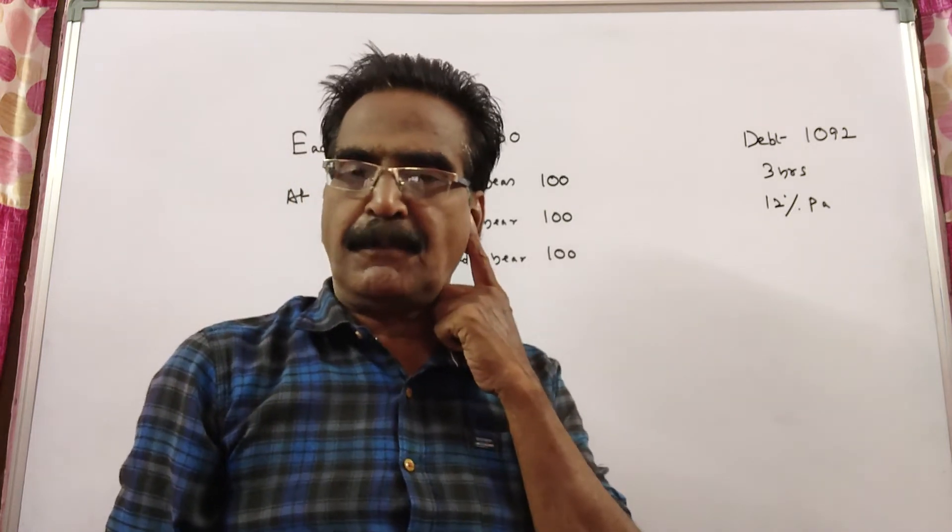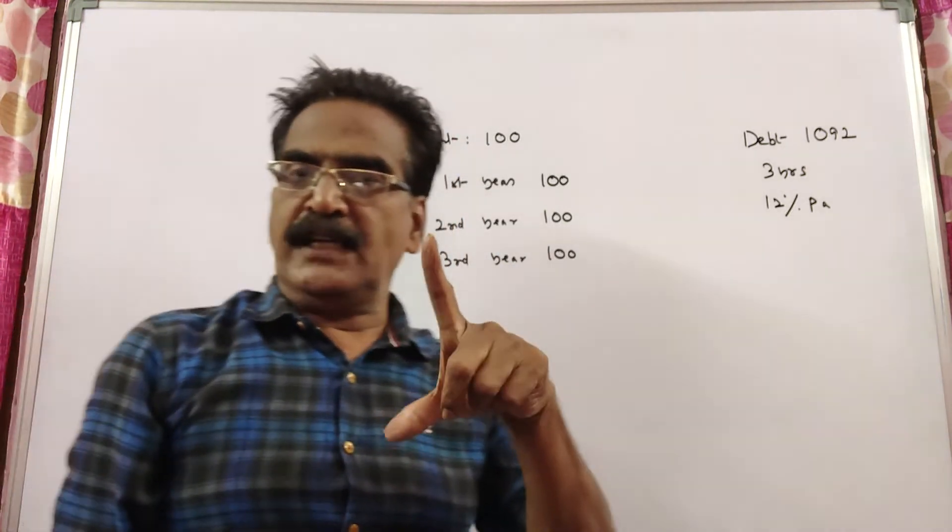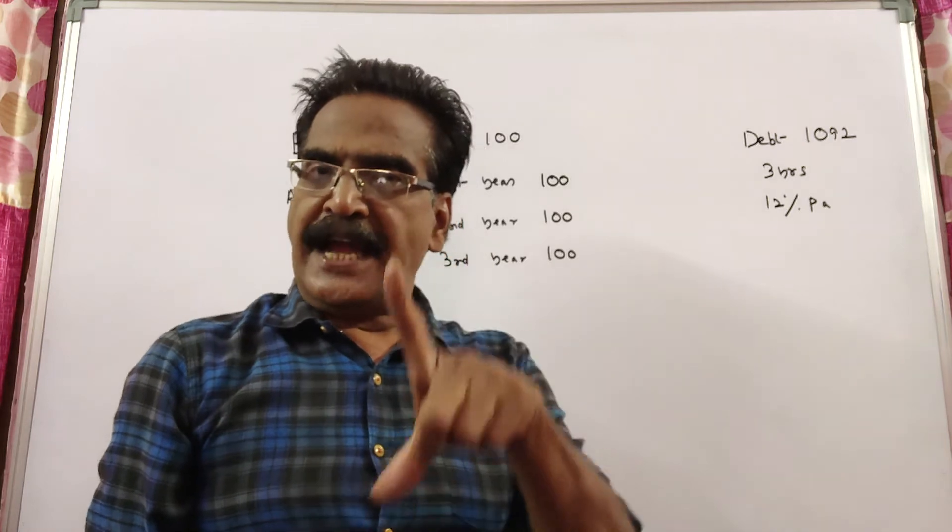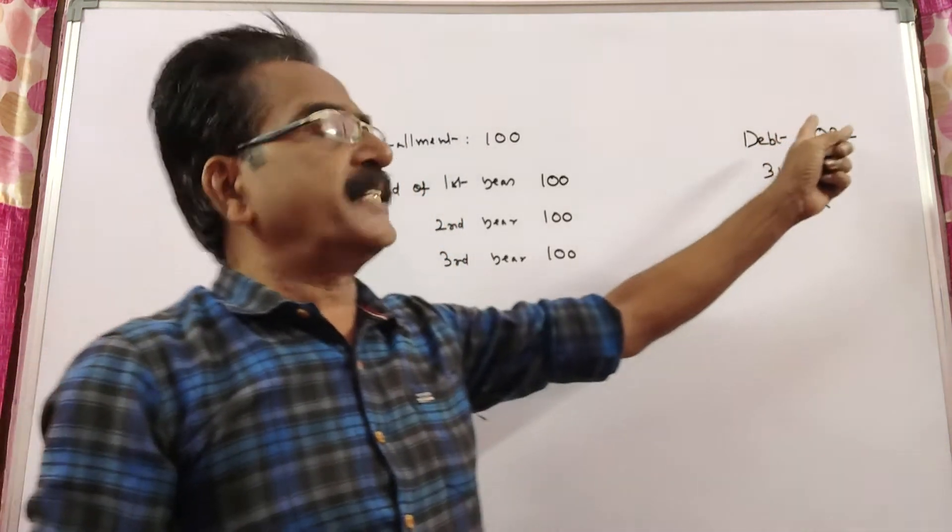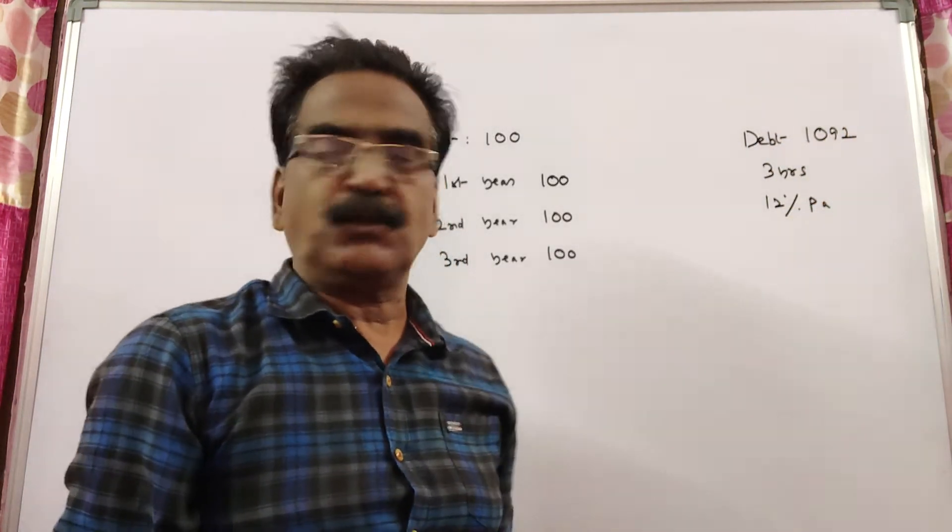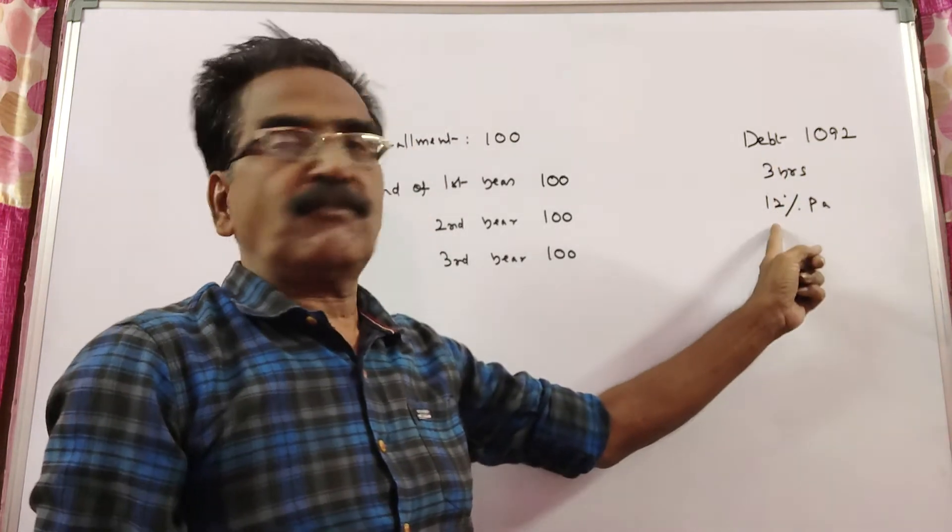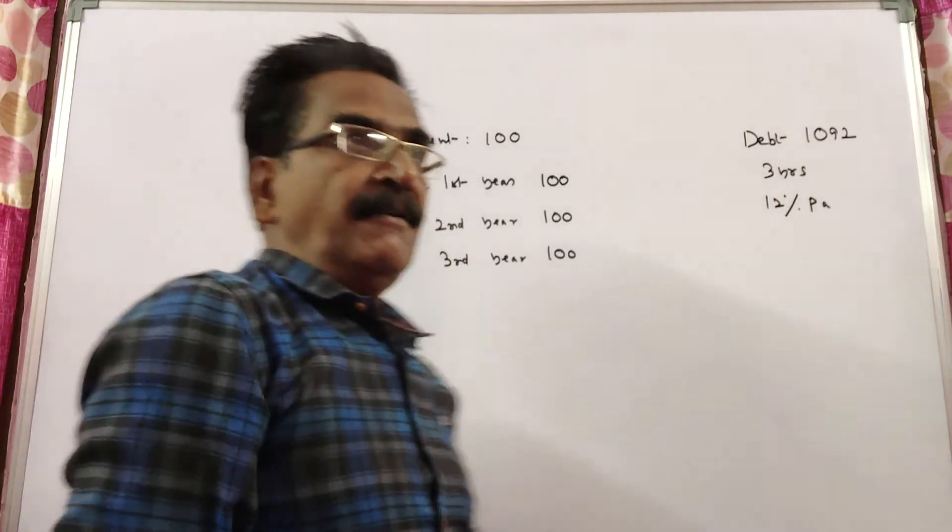See friends, the problem is given in the description box. What annual installment or annual payment will discharge a debt of Rs. 1092 due in 3 years at 12% per annum?